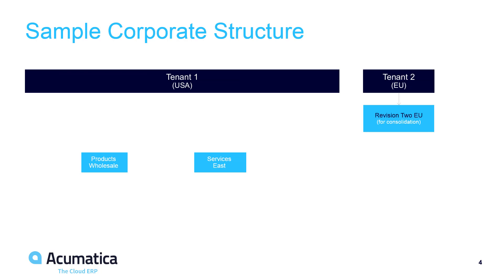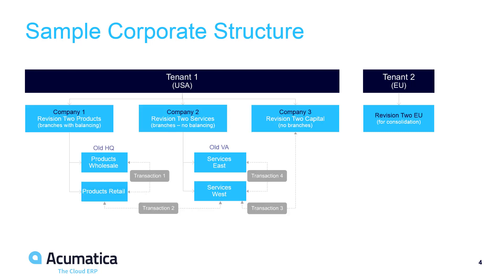To demonstrate, I will convert the existing sales demo company from two branches to a larger organization with three companies and four branches. The existing headquarters branch has been moved under the products company. This company has two branches which need to file separate tax returns and require automated balancing of inter-branch transactions.